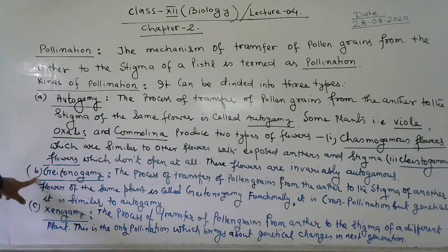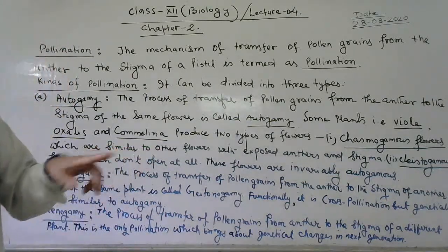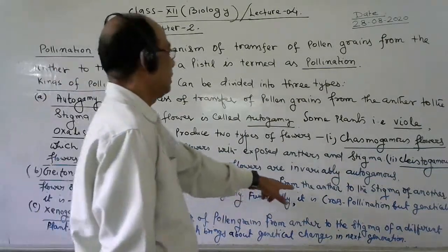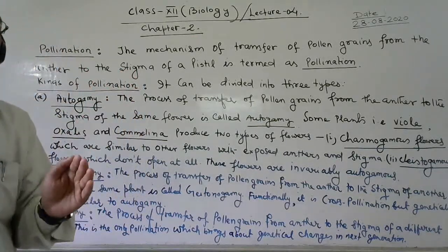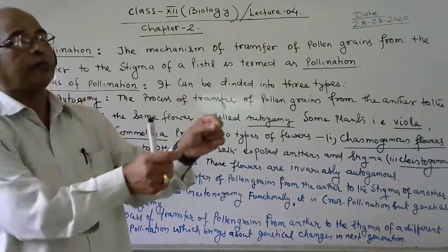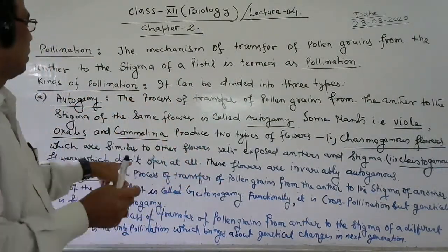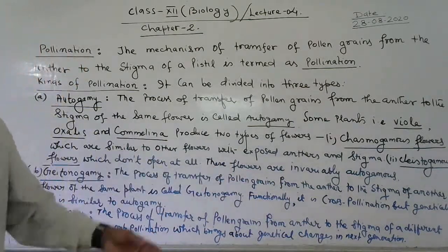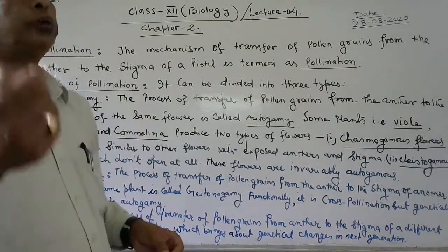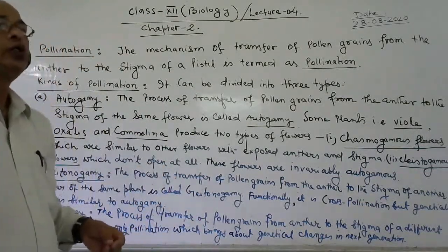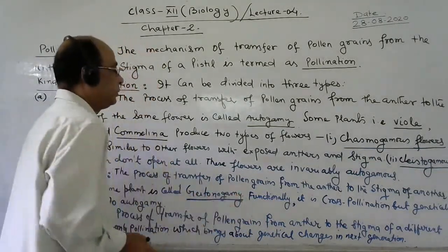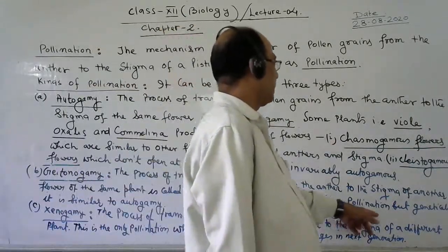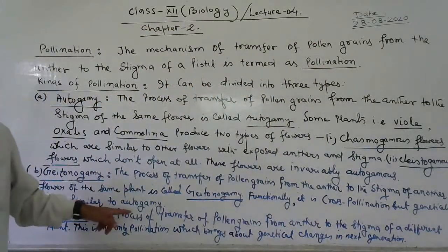The second type is geitonogamy. Geitonogamy means the process of transfer of pollen grains from the anther to the stigma of another flower on the same plant. Suppose you think about a mango tree — pollen from one flower will pollinate the stigma of another flower on the same plant. Genetically, geitonogamy is similar to autogamy.